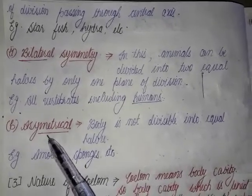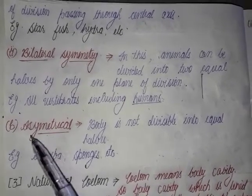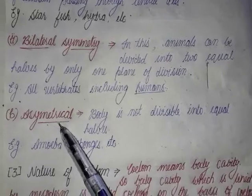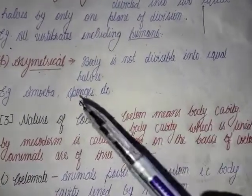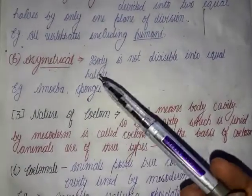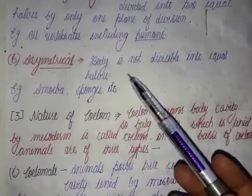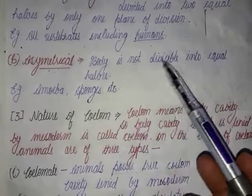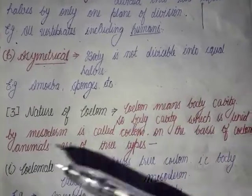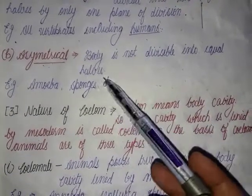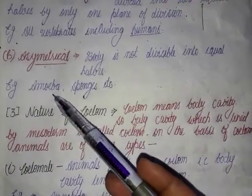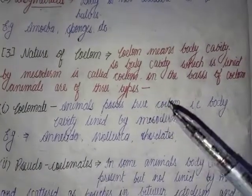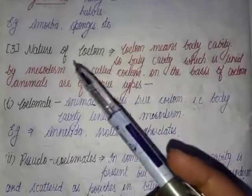The second type of animals based on body symmetry are the asymmetrical animals. As the name indicates, the body cannot be divided into two equal halves. Examples of asymmetrical organisms are amoeba and sponges.